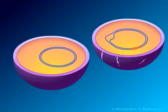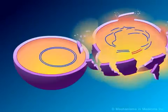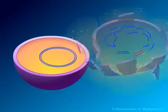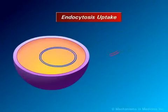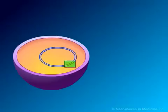When a bacterium containing a resistance gene dies, naked DNA is released into the surrounding environment. If a bacterium of sufficient similarity to the dead one is in the vicinity, it will be able to uptake the naked DNA containing the resistance gene.